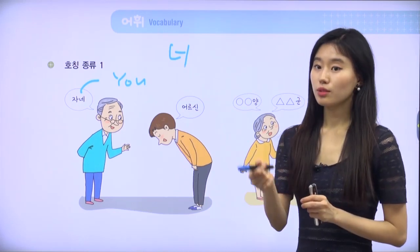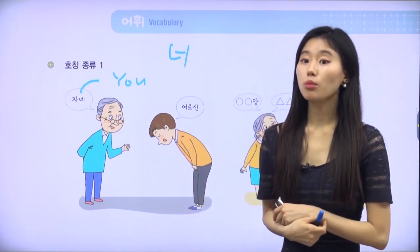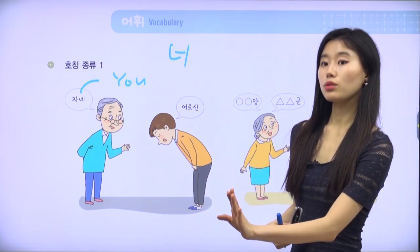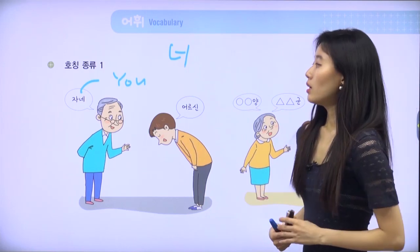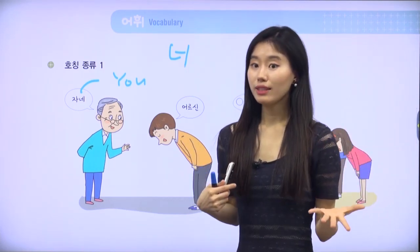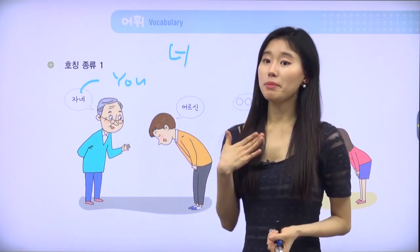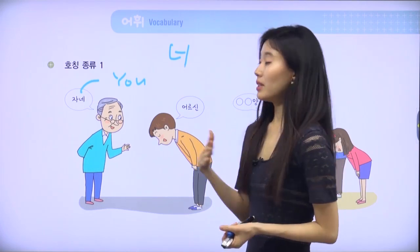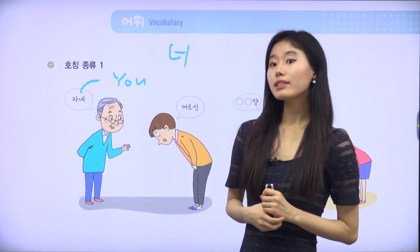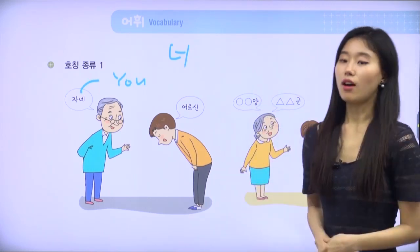자네 is used when you are scolded, or it's a respectable way of calling 'you,' especially to young people from elders. But even if I'm older than someone, I wouldn't use 자네, because I'm still young — I'm not aged yet. So 자네 is from elder people's language. So we have 자네 and 어르신.